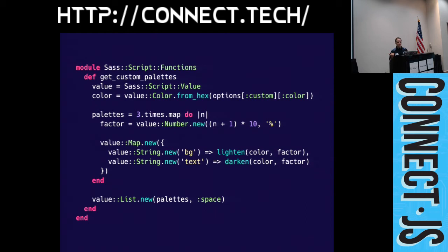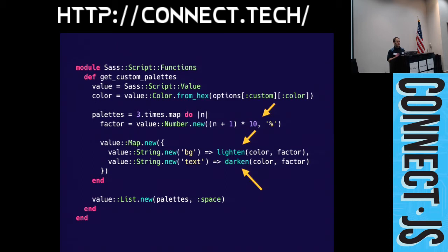Back in the functions module, we've added get_custom_palettes, which utilizes that passed data. We grab options[:custom][:color] to get the color. We require the user to supply a hexadecimal string, then use Sass::Script::Value::Color.from_hex to convert it to a Sass color type — because remember, we need Sass types in these functions. We generate a palette of three colors by lightening and darkening the input color: the first palette lightens and darkens by 10%, the second by 20%, the third by 30%. Then we return the value list.